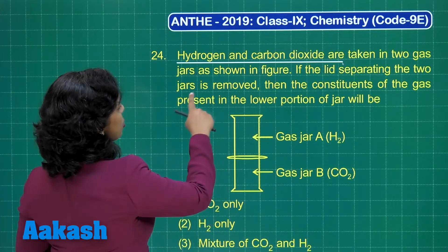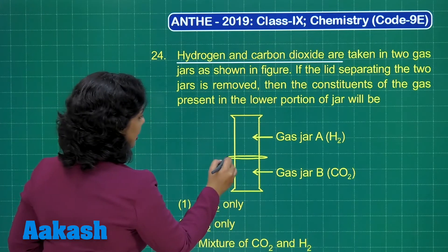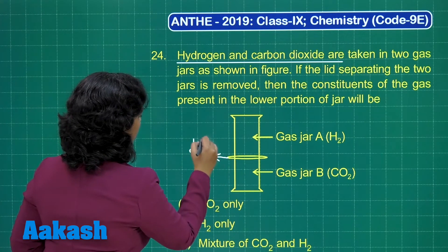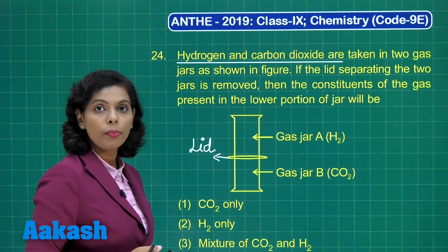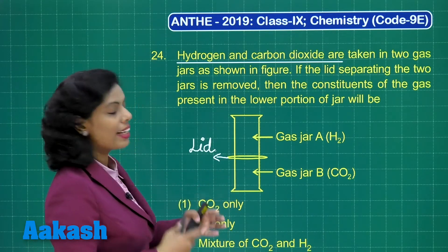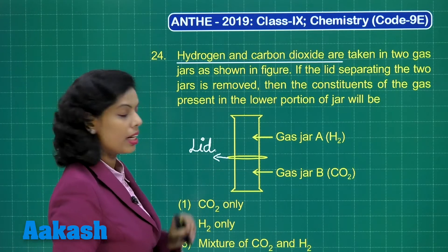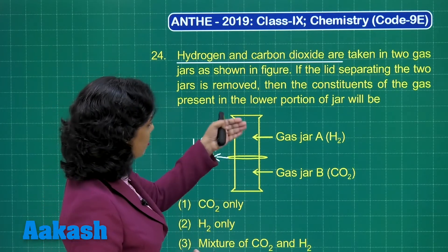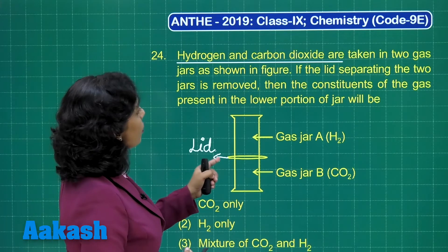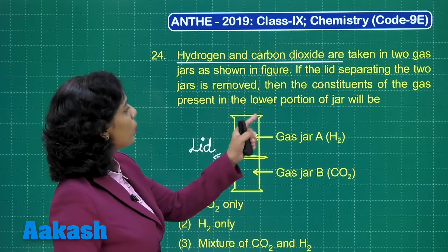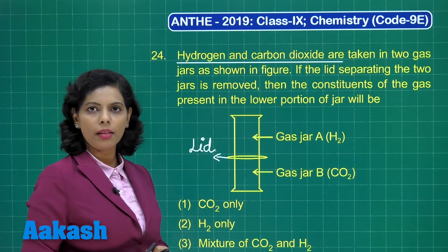Now, the lid separating the two gas jars is removed. Once the lid is removed, these two gases intermix — hydrogen gets mixed with carbon dioxide, and carbon dioxide gets mixed with hydrogen. This process of intermixing of gases is diffusion.